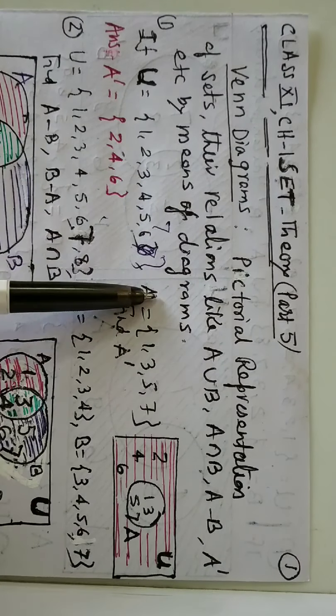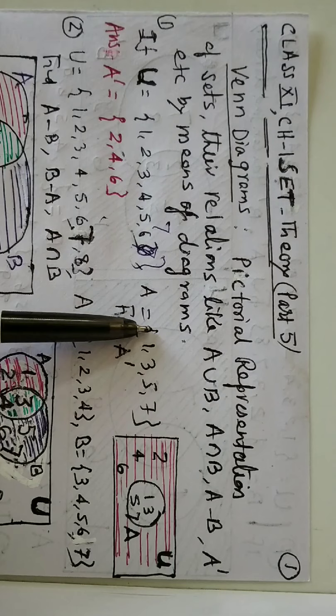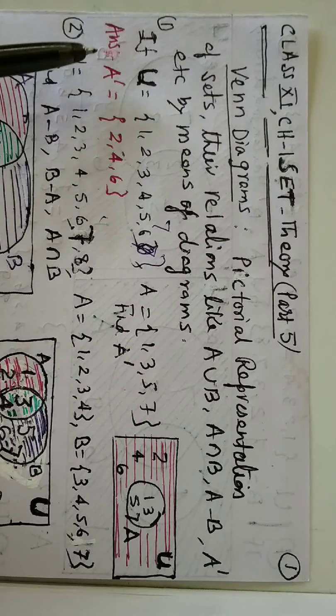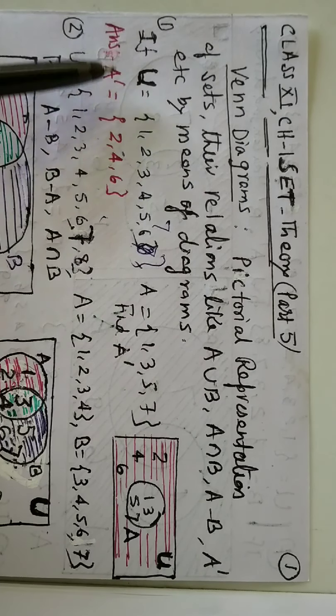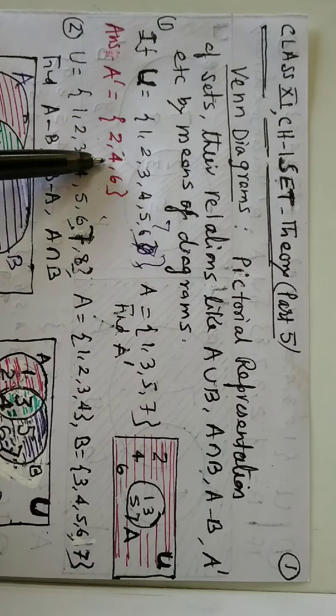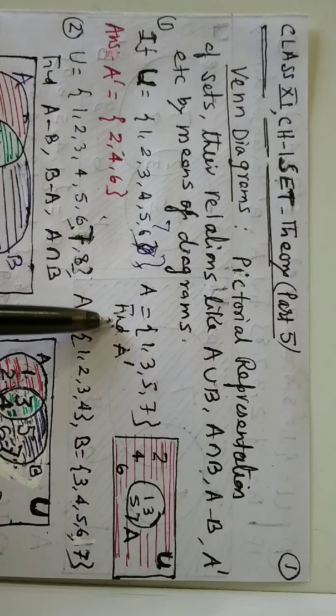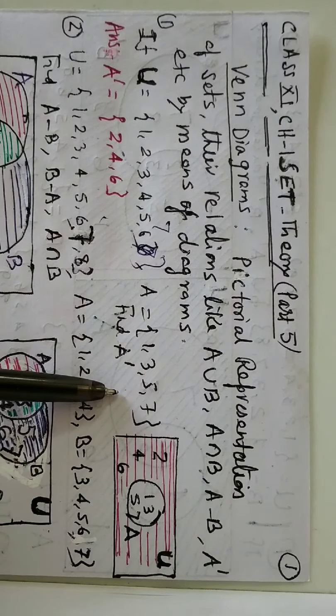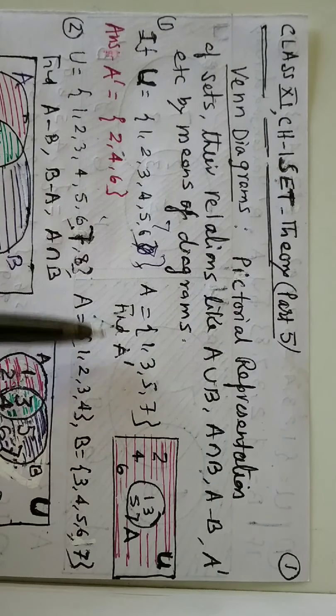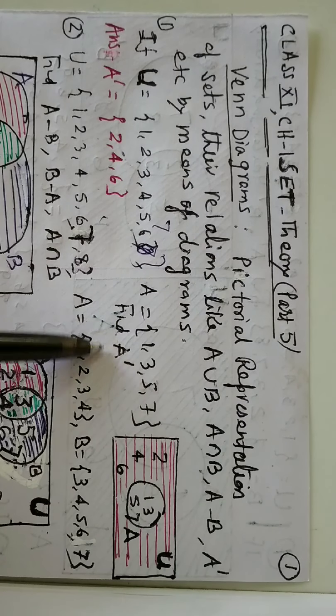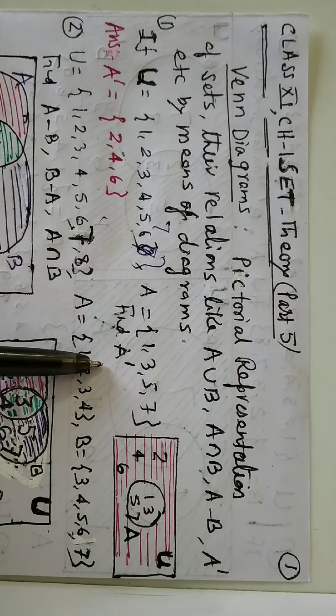By means of diagrams, for example, if U is equal to {1, 2, 3, 4, 5, 6, 7} and A is equal to {1, 3, 5, 7}, find A complement.